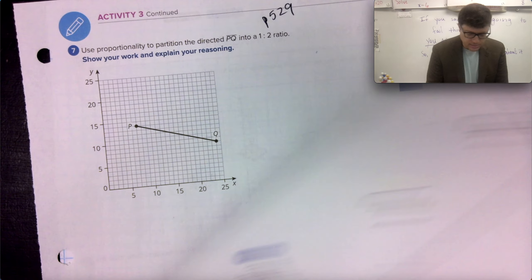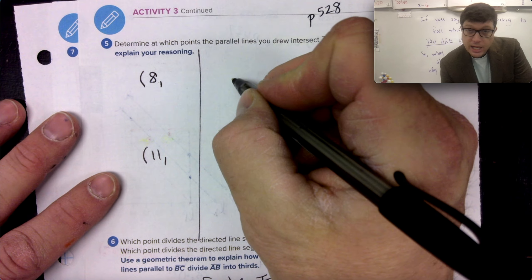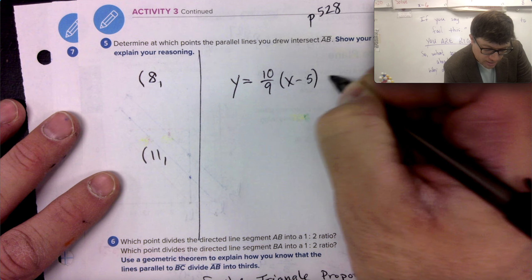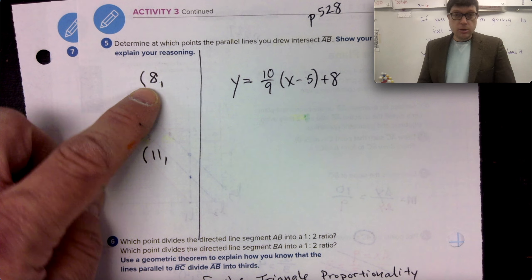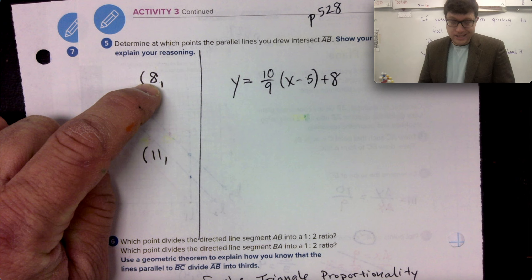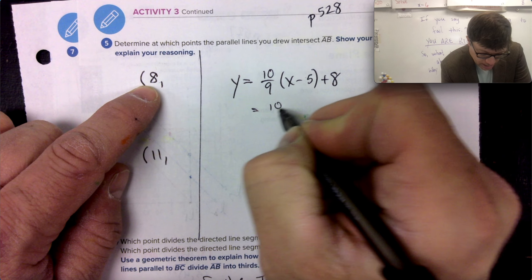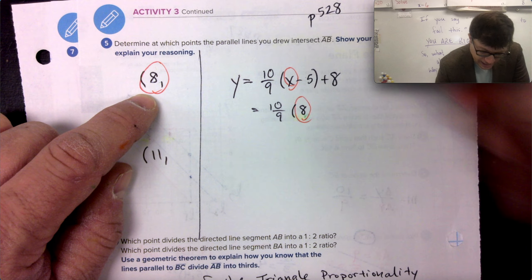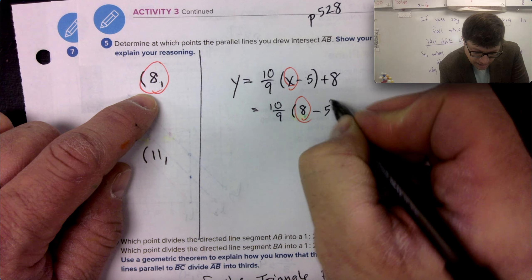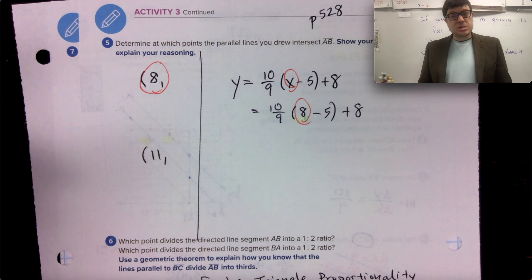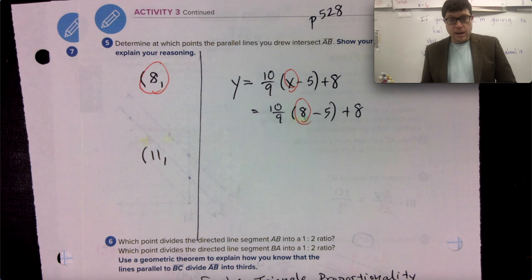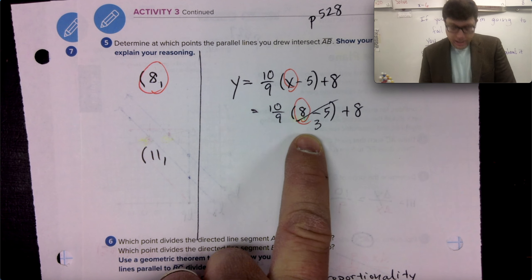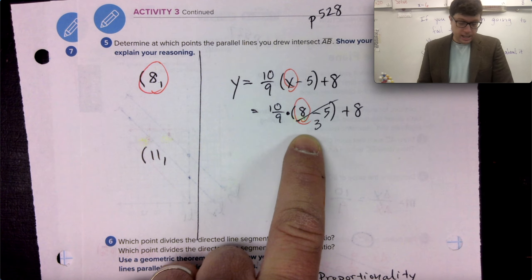I'm going to take that equation, Y equals 10 ninths X minus five plus eight. And I'm going to put eight where X is. So 10 ninths times eight, this eight, that X, that eight minus five plus eight. We got to do some math. You got to do what you know, eight minus five is. That becomes three. You got to do 10 over nine times three. That's what this is, is a multiply plus eight.